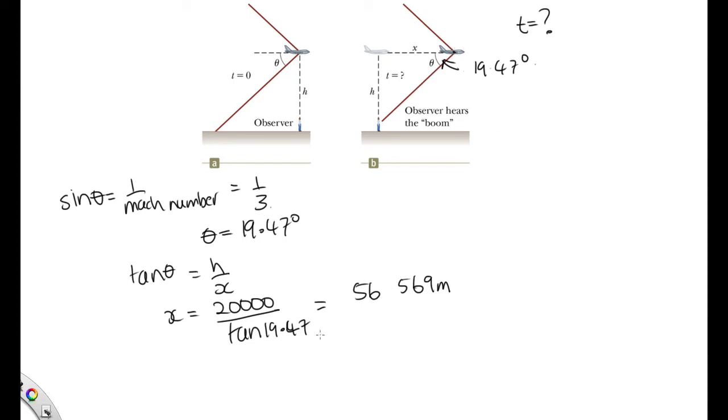Now we can use this distance to work out the time, because we know how fast the plane is going. It's going at three times the speed of sound. Now we were told that we could assume that the speed of sound in this case was equal to 335 meters per second. So this tells us how fast the plane is going. The velocity of the plane is equal to three times this.